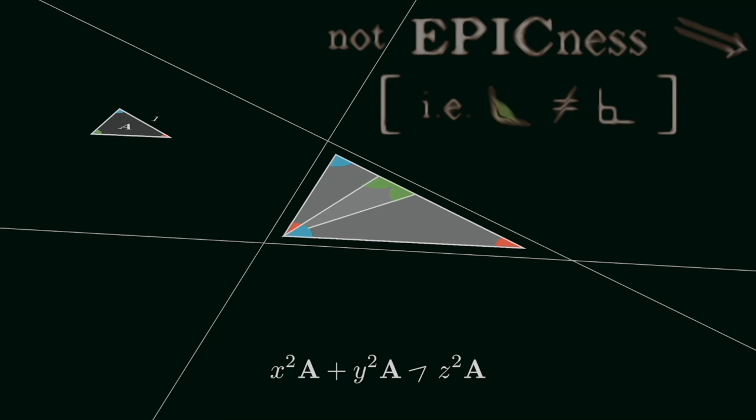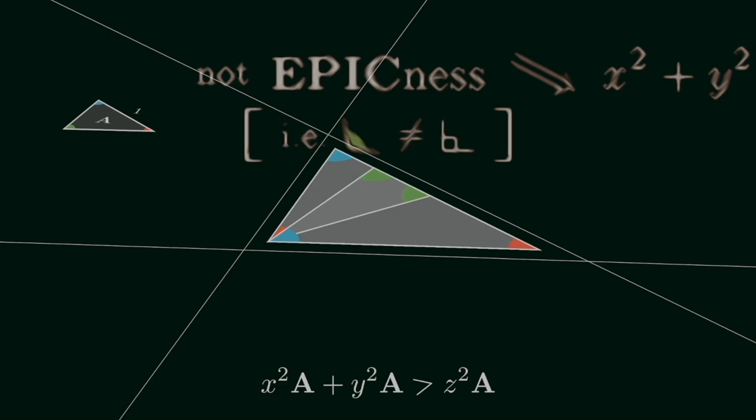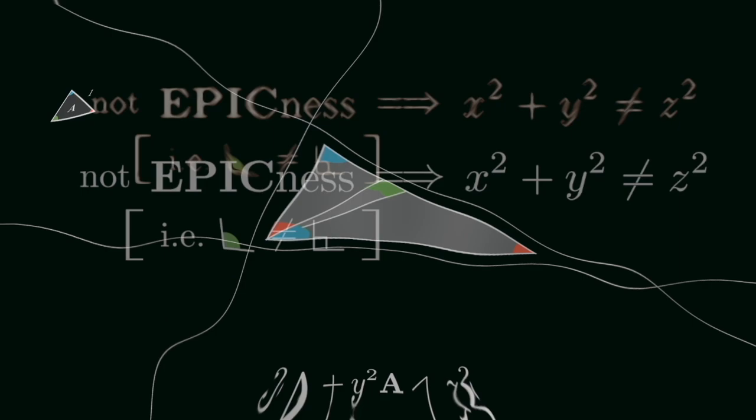calling forth the power of the contrapositive leads us to conclude that obeying the Pythagorean Theorem implies epicness of our triangle.